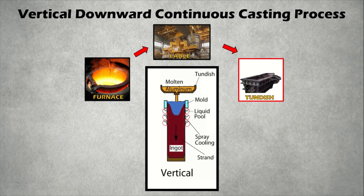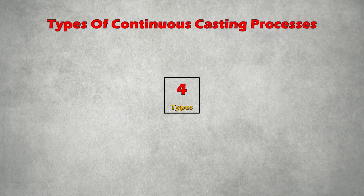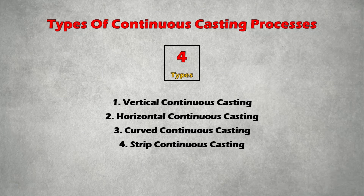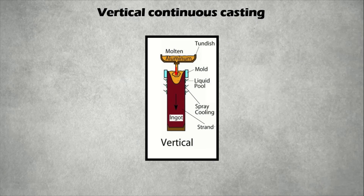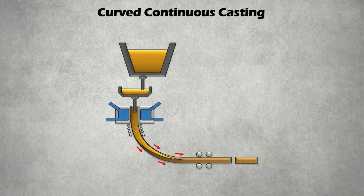There are four types of continuous casting processes: vertical, horizontal, curved, and strip continuous casting. The design of continuous casting machines may vary, but almost all variations are very similar. Vertical continuous casting is subdivided into two types: vertical downward and vertical upward continuous casting, where solidification of the alloy occurs as the metal flows down. In curved continuous casting, if the strand in the vertical process is bent slightly at the cut-off side, it is known as curved continuous casting.